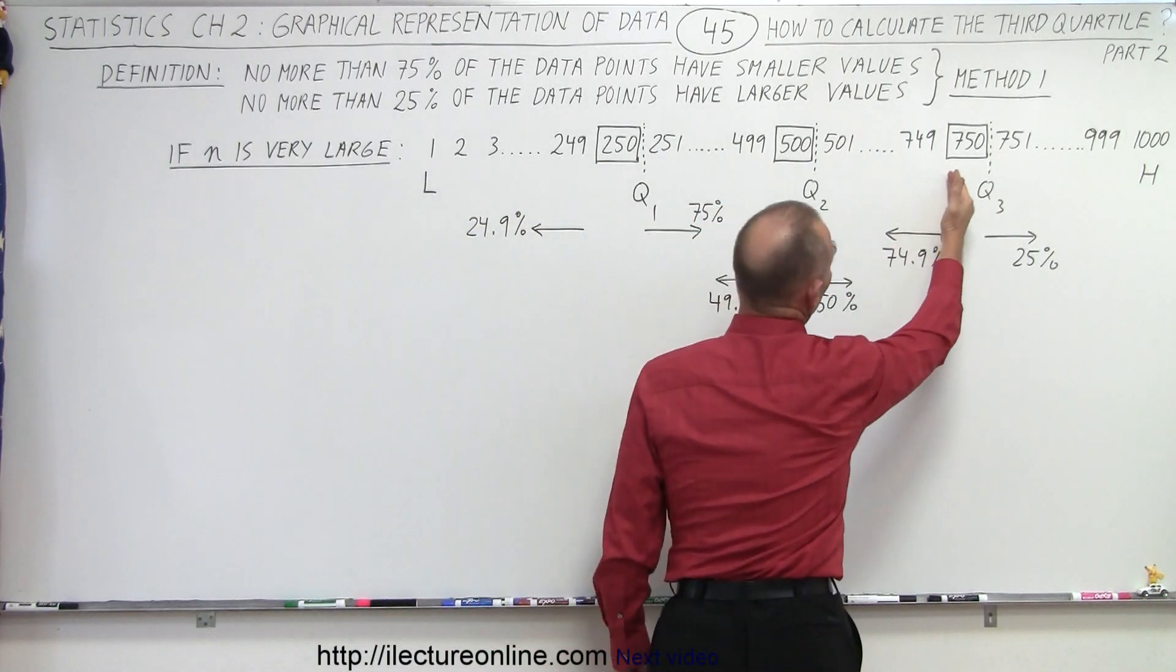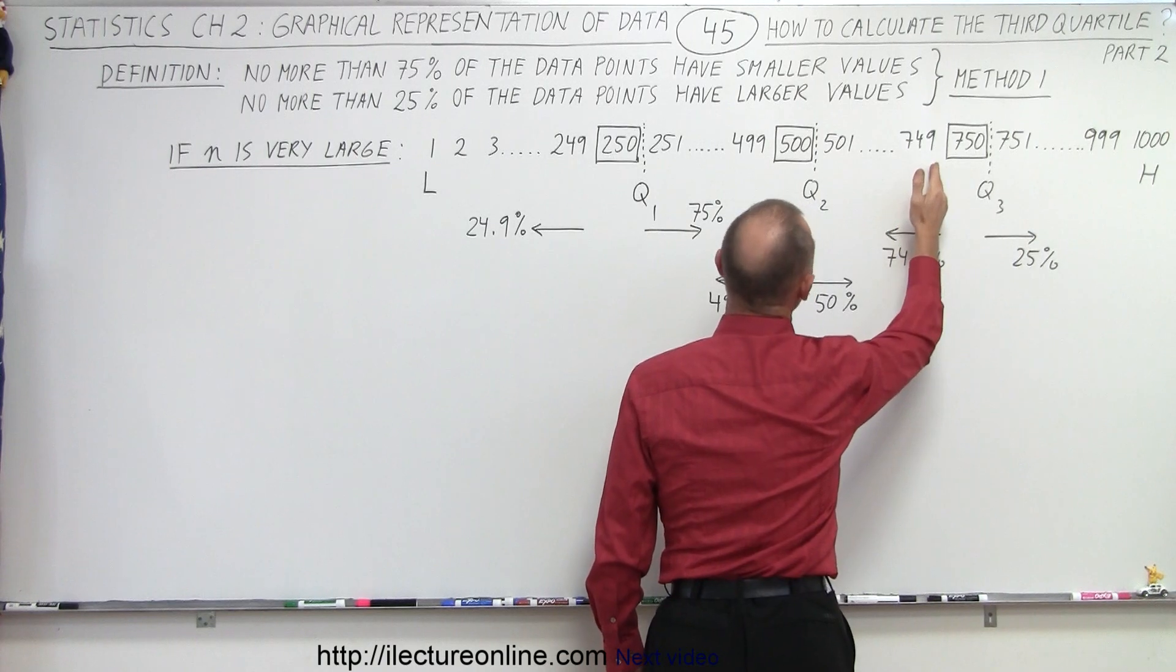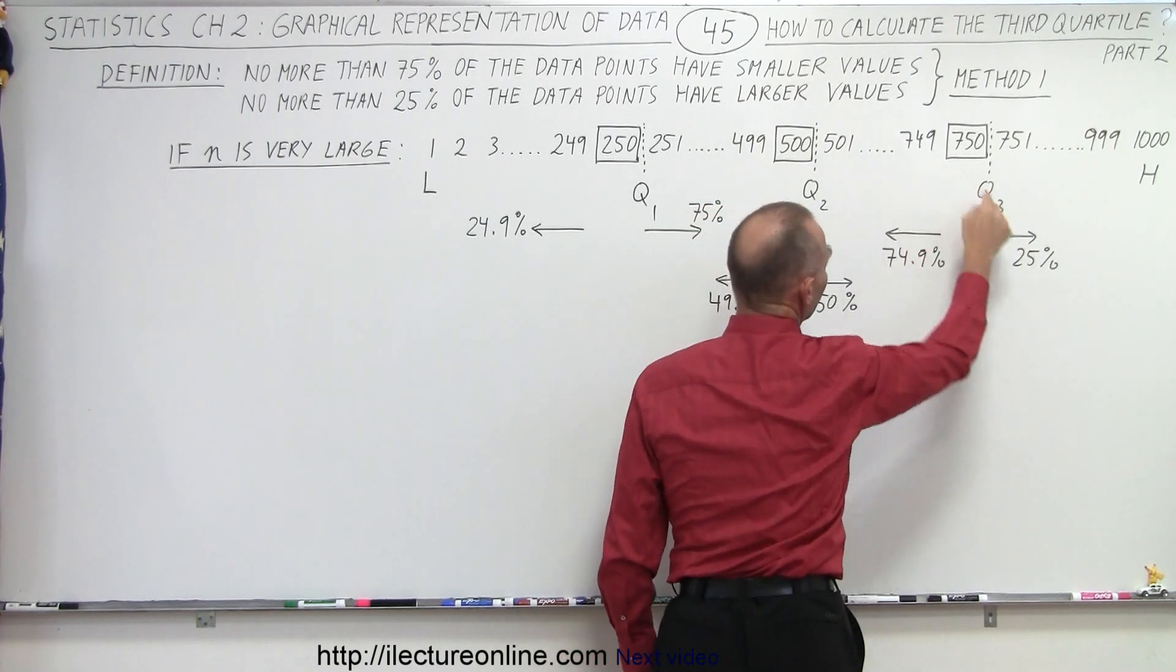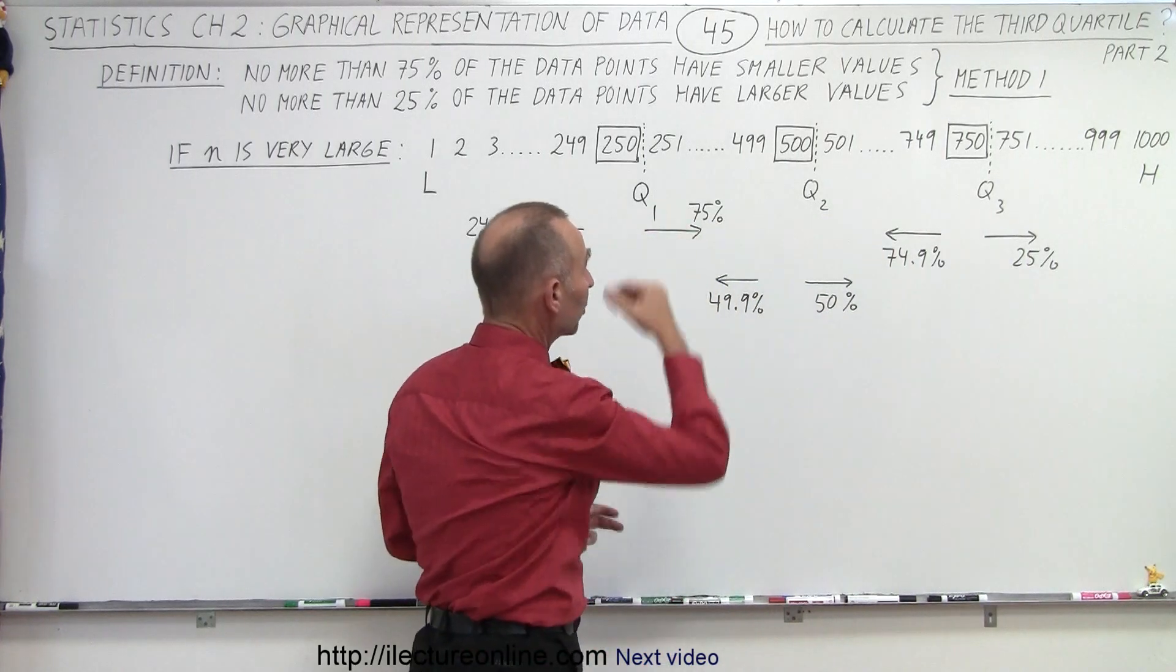If I look to the left, I see 74.9% of all the data values are smaller than the one we picked, and 25% have larger values, which meets our condition.